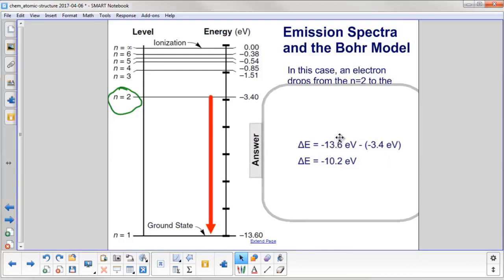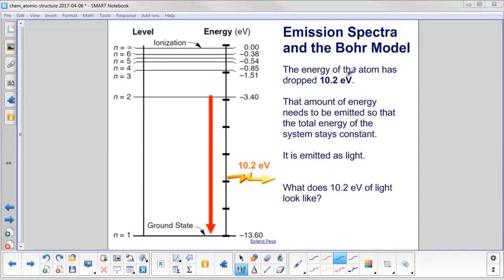Well, let's see. We start with our final energy, which is negative 13.60 eV. We subtract the initial. Most of physics, it's always final minus initial. And we get a change in energy of negative 10.2 electron volts. So the energy of the atom has dropped by 10.2 electron volts. Its potential energy has gone down. So that needs to be emitted so that the total energy of the system stays constant. It will be emitted as light. And here's a symbol for light being emitted at 10.2 eV.